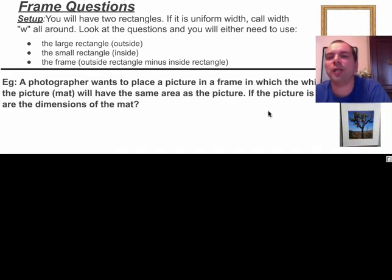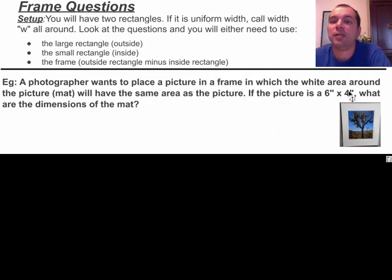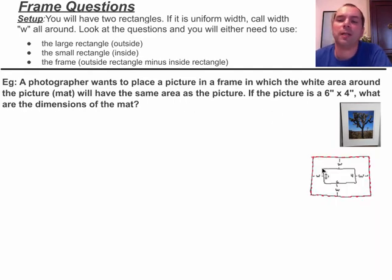A photographer wants to place a picture in a frame in which the white area around the picture, the mat, will have the same area as the picture. If the picture is 6 by 4, what are the dimensions of the mat? So you want to draw something like this, a thing on the outside, a thing on the inside. We know that it's 6 by 4. I chose to put it sideways and that's okay.